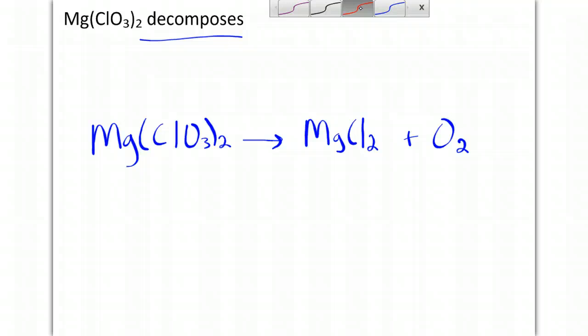When we balance this equation, we have one magnesium on both sides, two chlorines on both sides. We have six oxygens on the left, so 3 times 2 makes six oxygens on the right. This has a 1 to 1 to 3 ratio. 1, 1, 3.